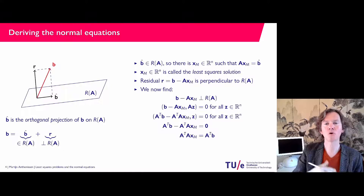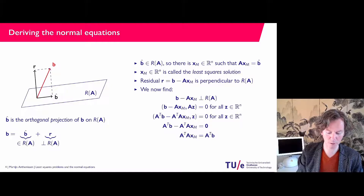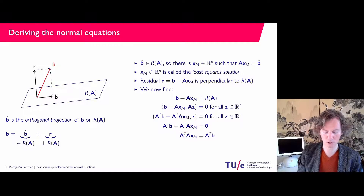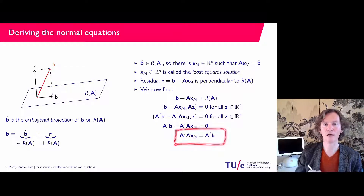Playing around with the inner product: moving A to the first argument turns it into A-transpose, giving the equation A-transpose times (B minus A times X_m) dotted with Z equals zero. Since this must hold for all Z in R^N, and the only vector in R^N orthogonal to all others is the zero vector, the first argument must be zero. Moving terms to the other side gives A-transpose A times X_m equals A-transpose B — these are the normal equations of Gauss.